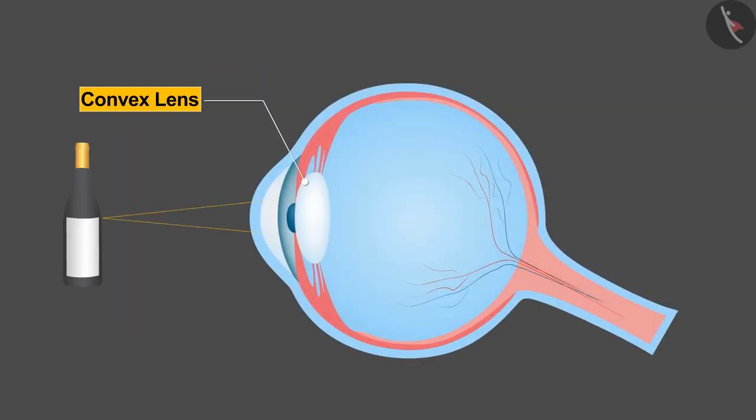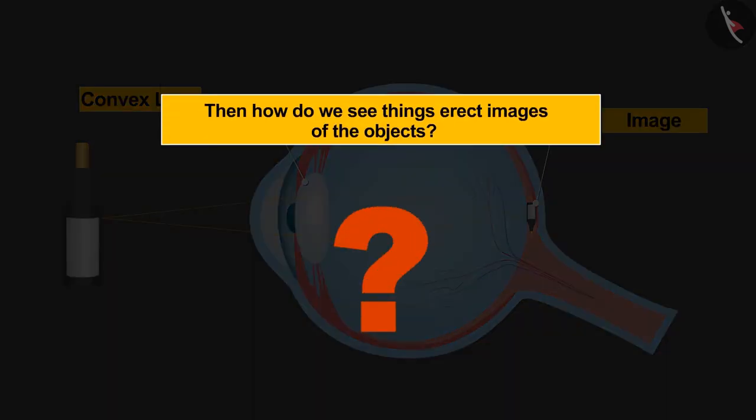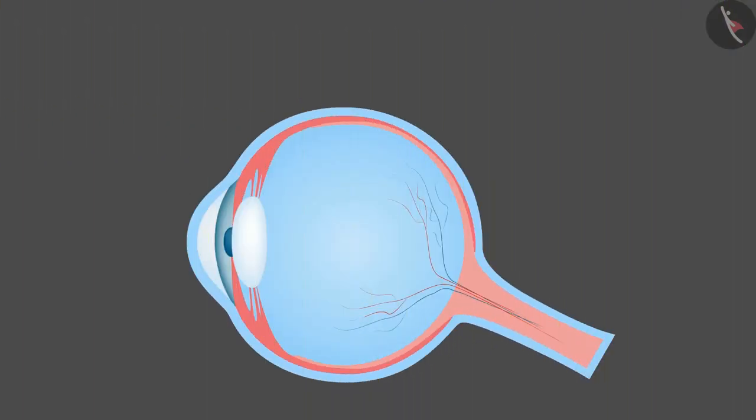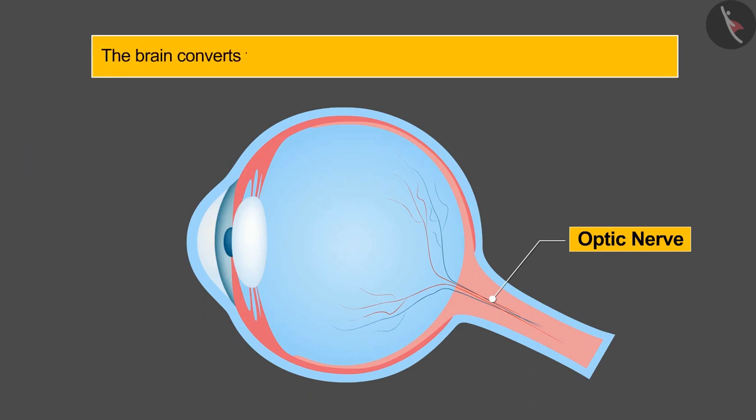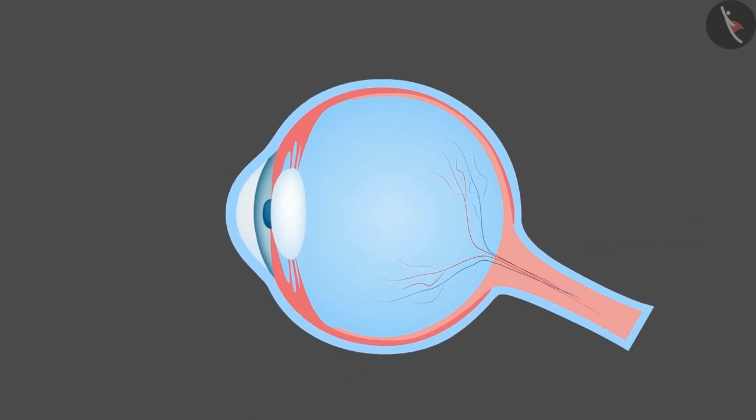Being a convex lens, always a real and inverted image is formed on the retina. Then how do we see erect images of the objects? From here, the work of the brain begins, which is connected to the eye through the optic nerve. The brain converts signals from the optic nerves and we see erect images.